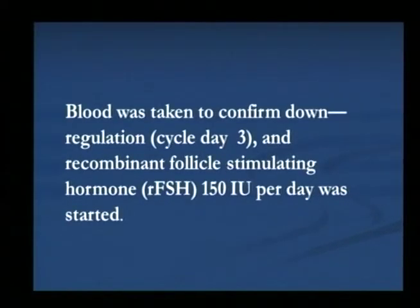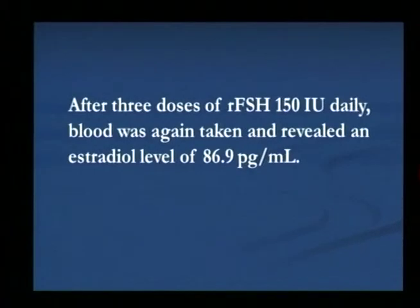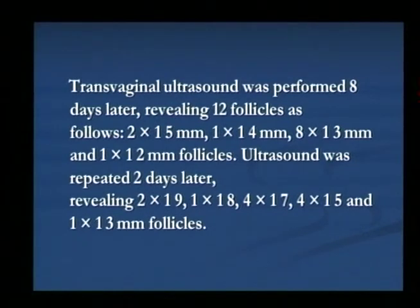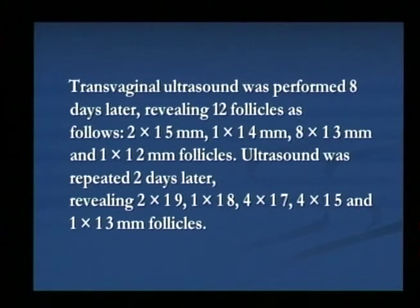Here I am giving a short report of the condition. The patient was followed with down-regulation and placed on recombinant FSH 150 international units per day. After three doses, blood tests revealed an estradiol of about 86.9. The dose of recombinant FSH was increased to 200 international units for another two days, and repeated blood tests revealed a satisfactory rise in estradiol. Ultrasound showed 12 follicles: 2×15mm, 1×14mm, 8×13mm, and 1×12mm. Repeated two days later, growth was seen to 2×19mm, 18.1mm, 17mm×4, 15mm×4, and 13mm follicles.